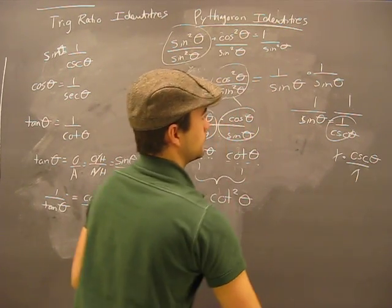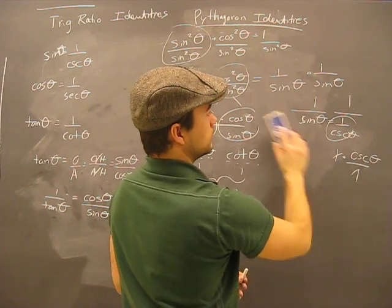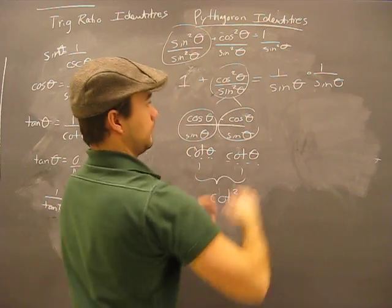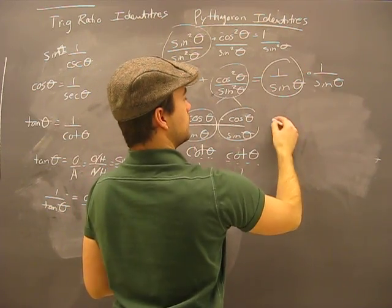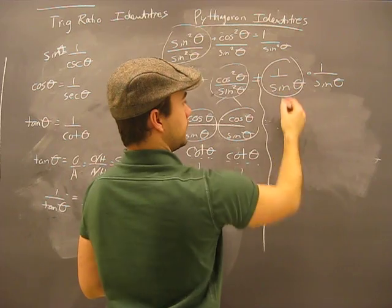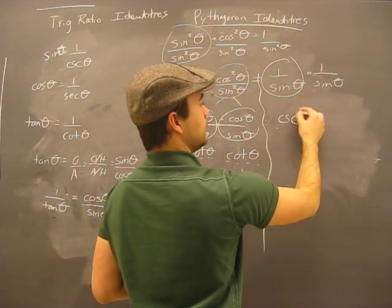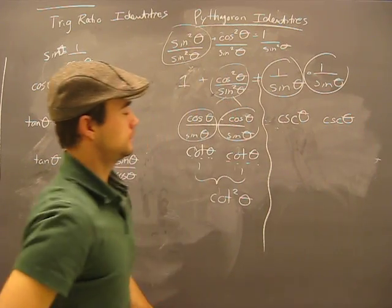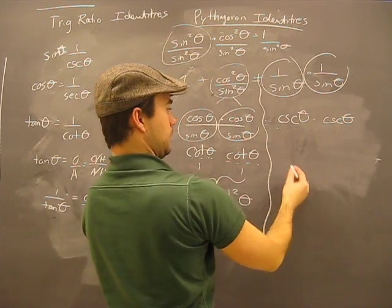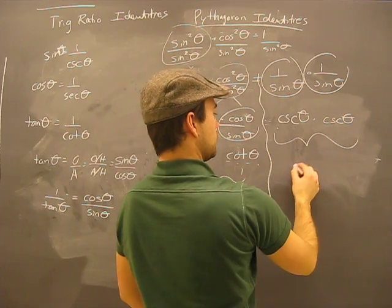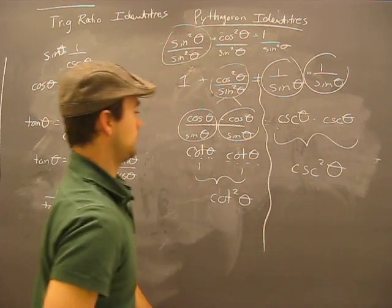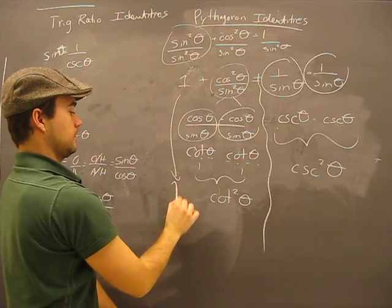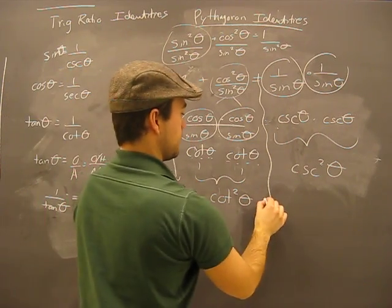So what we have, this is simply cosecant theta times cosecant theta, cosecant squared theta. Oh, don't forget the 1. That's still there. So we have our left side and our right side.